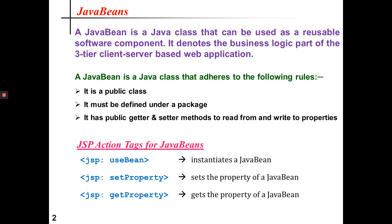There are certain rules to follow for a JavaBean. It must be a public class, it must be defined under a package, and it must have public getter and setter methods to read from and write to properties. A property is basically an instance variable of the JavaBean class, and it mostly has a private access specifier. We use getter and setter methods to deal with the properties of a JavaBean.